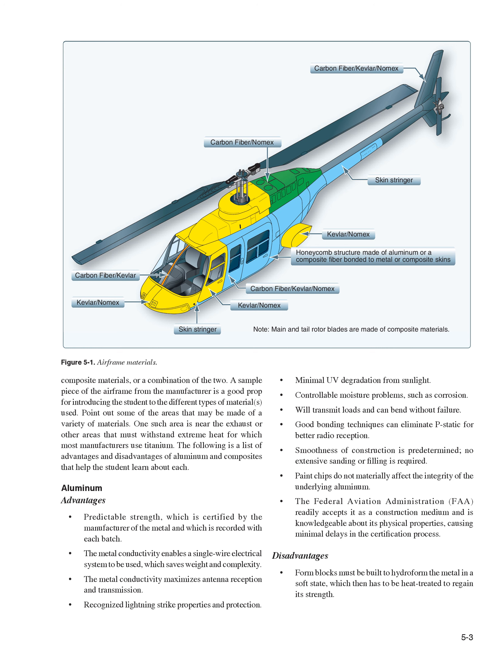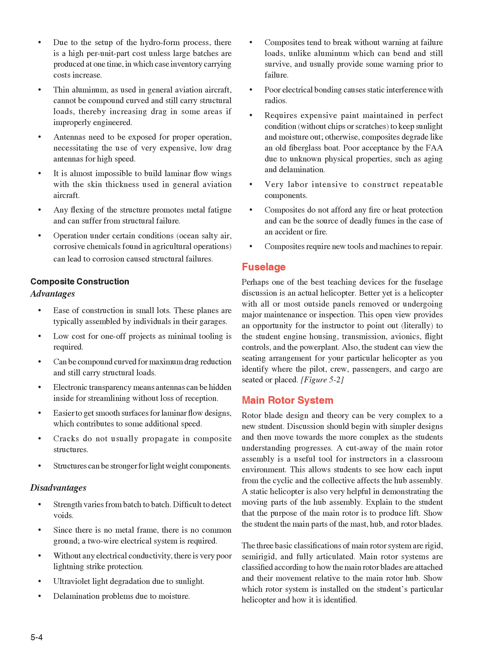Aluminum disadvantages: form blocks must be built to hydroform the metal in a soft state, which then has to be heat-treated to regain its strength. Due to the setup of the hydroform process, there is a high per-unit part cost unless large batches are produced at one time, in which case inventory carrying costs increase. Thin aluminum, as used in general aviation aircraft, cannot be compound curved and still carry structural loads, thereby increasing drag in some areas if improperly engineered. Antennas need to be exposed for proper operation, necessitating the use of very expensive, low-drag antennas for high speed. It is almost impossible to build laminar flow wings with the skin thickness used in general aviation aircraft. Any flexing of the structure promotes metal fatigue and can suffer from structural failure. Operation under certain conditions, such as ocean salty air or corrosive chemicals found in agricultural operations, can lead to corrosion-caused structural failures.